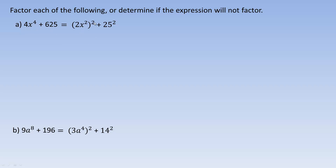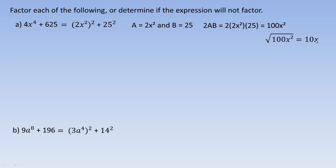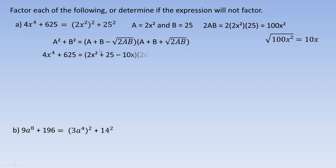So, 2x squared, squared would be 4x to the fourth, and 25 squared is 625 — so that's your a and that's your b. a is 2x squared and b is 25. If we look at the 2ab quantity, it would be 2 times 2x squared times 25, and that's 100x squared. We can take the square root of 100x squared and get a nice integer value: 10x. That is a perfect square, so this will actually work. Here's the identity again: 4x to the fourth plus 625 equals — with 2x squared at the beginning of each — 25 added, and then minus 10x.